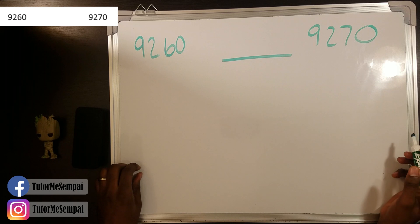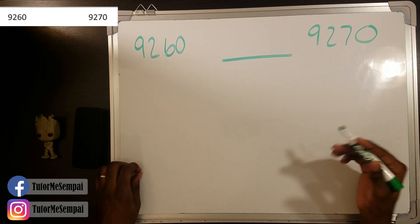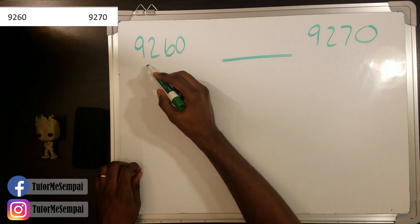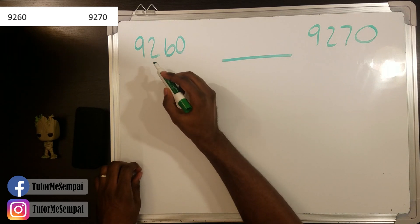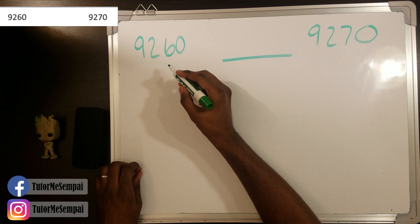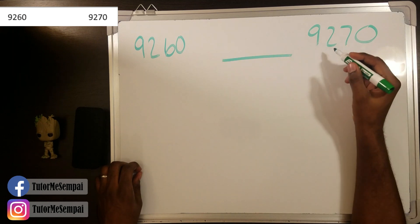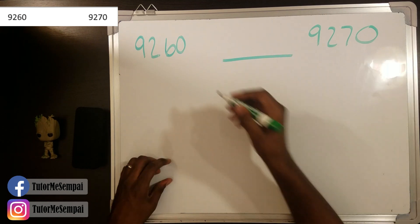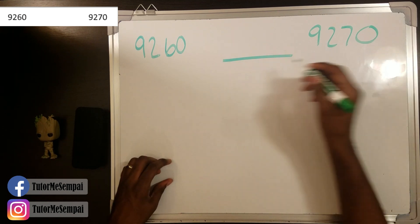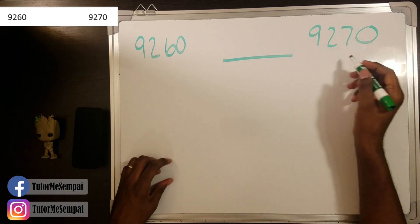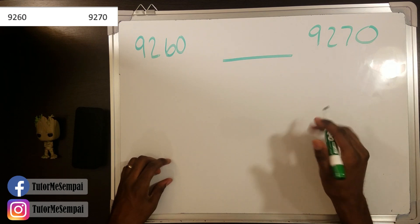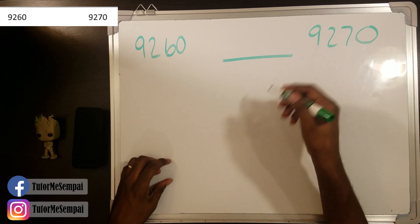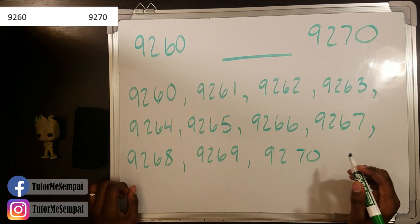So today's question has us trying to find the midpoint between 9,260 and 9,270. When you're trying to find the midpoint of two numbers, that's just finding the middle number between the two.